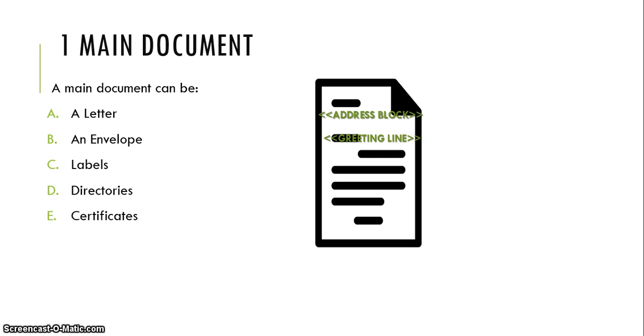Let's talk about the main document first. The main document can be a letter, an envelope, labels, directories, or certificates.